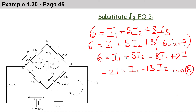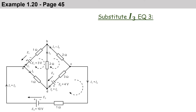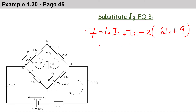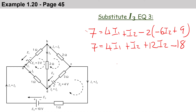Now substitute I3 into equation 3: 7 equals 4·I1 plus I2 minus 2·(minus 6·I2 plus 9). Multiplying out: 7 equals 4·I1 plus I2 plus 12·I2 minus 18. Taking minus 18 across: 25 equals 4·I1 plus 13·I2. This becomes equation 6.